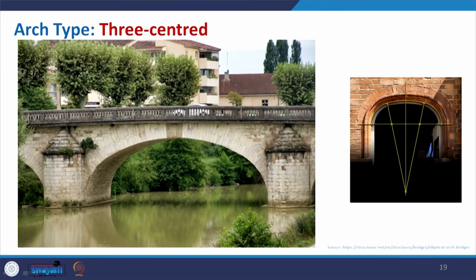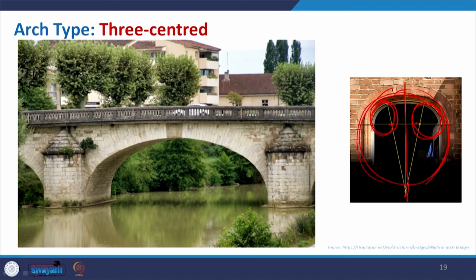The three-centered arch is different from the trefoil: here you have one circle, then a circle here, forming two points, and then a connection along the same perpendicular line creates a bigger circle. The arch is thus controlled by three points, which is why it is called a three-centered arch. When you go deeper, the upper portion of the arch becomes flatter. This is a very large circle with its center at the bottom.